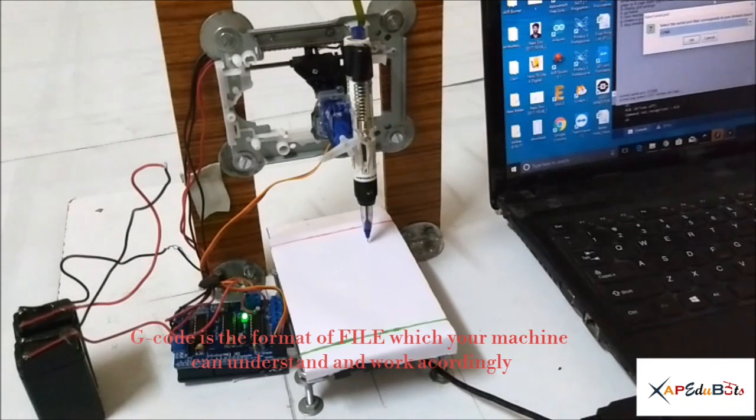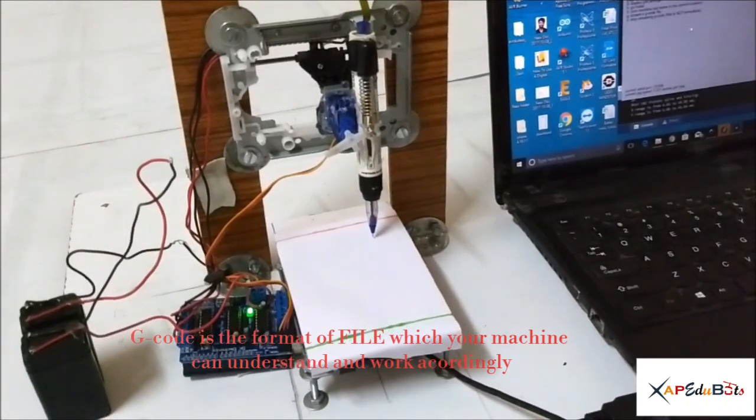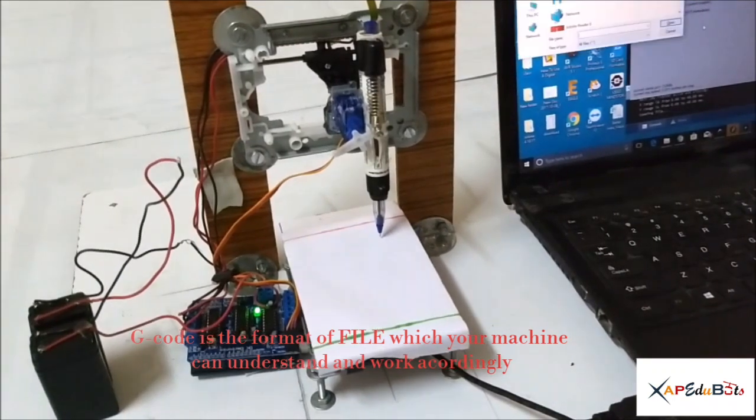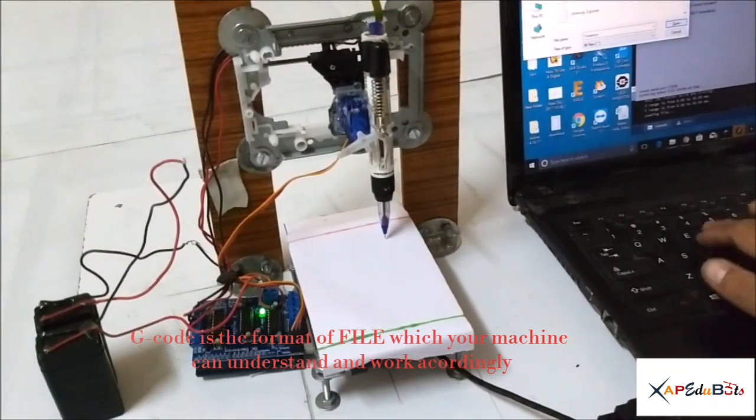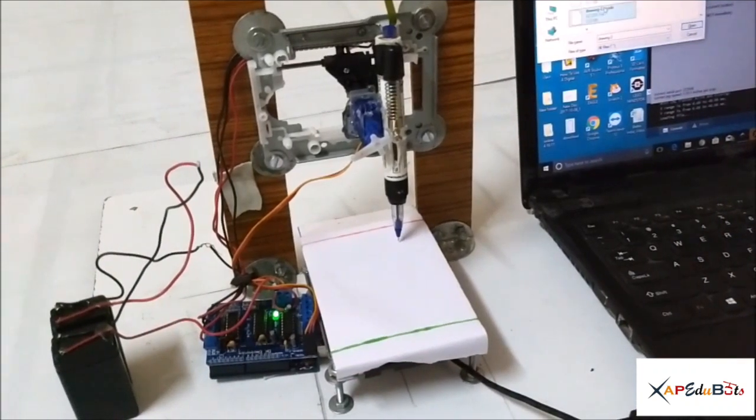I will select the port. Port is selected. Now I will select the file. This file name is draw2code.